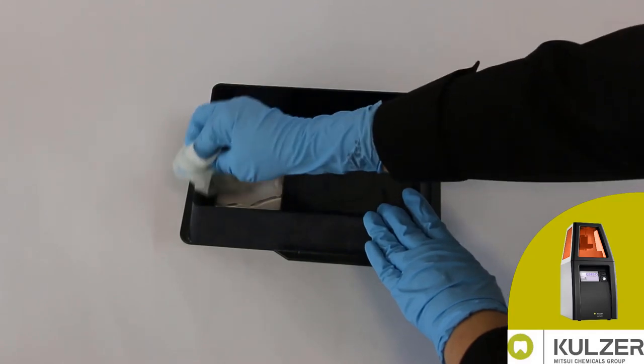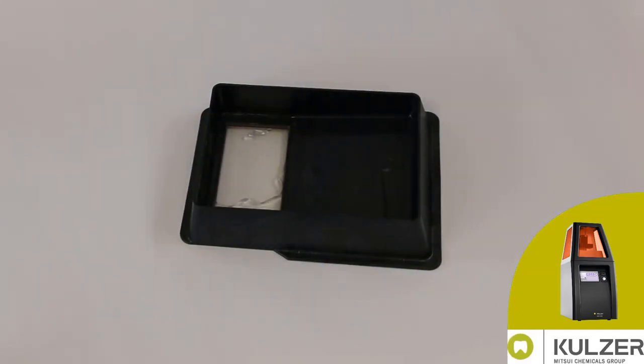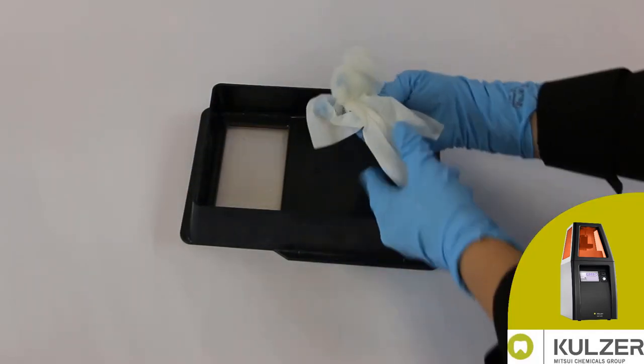Now material residues can be removed from the surface of the resin tray with the isopropanol using a soft wood-free paper towel.